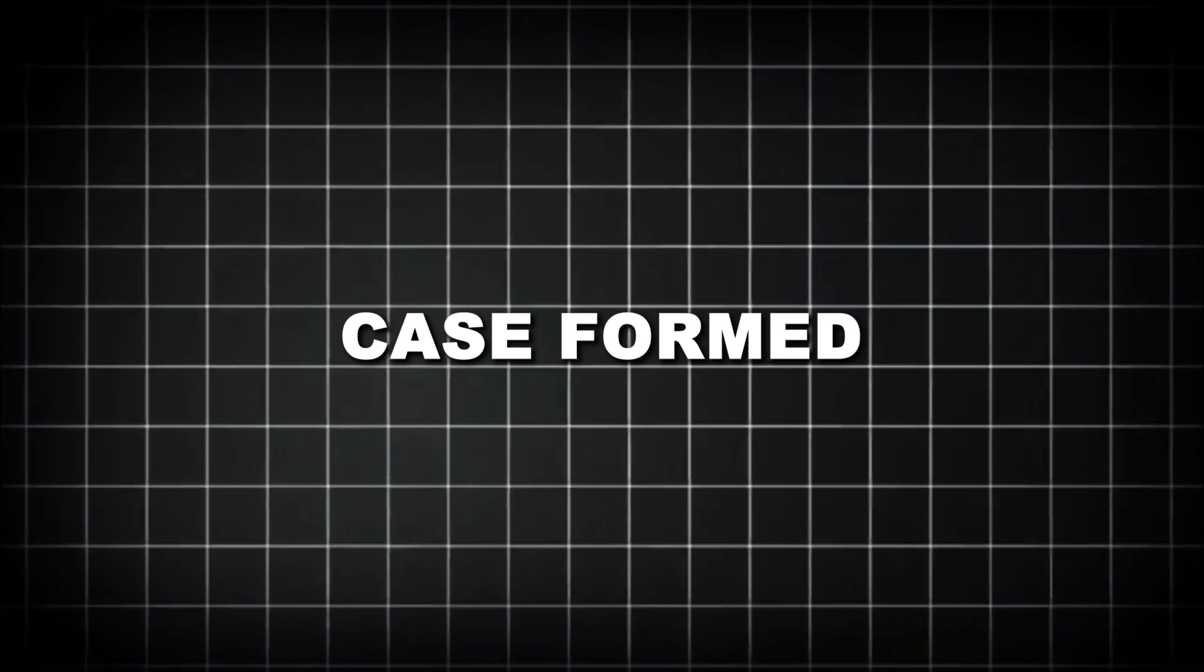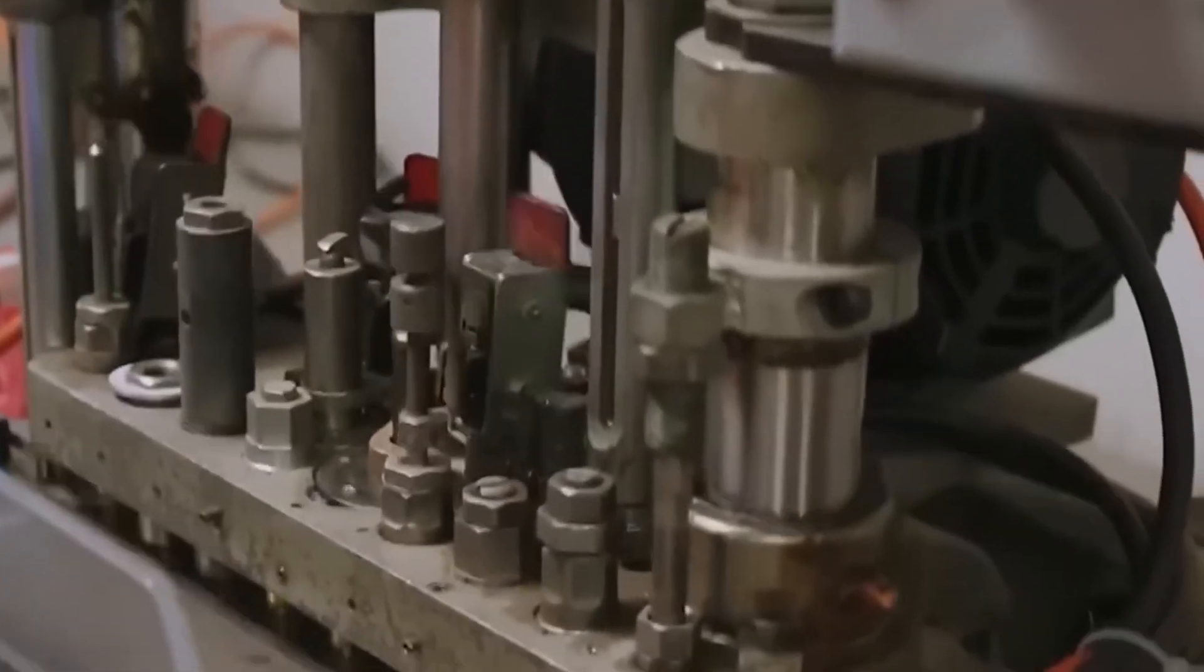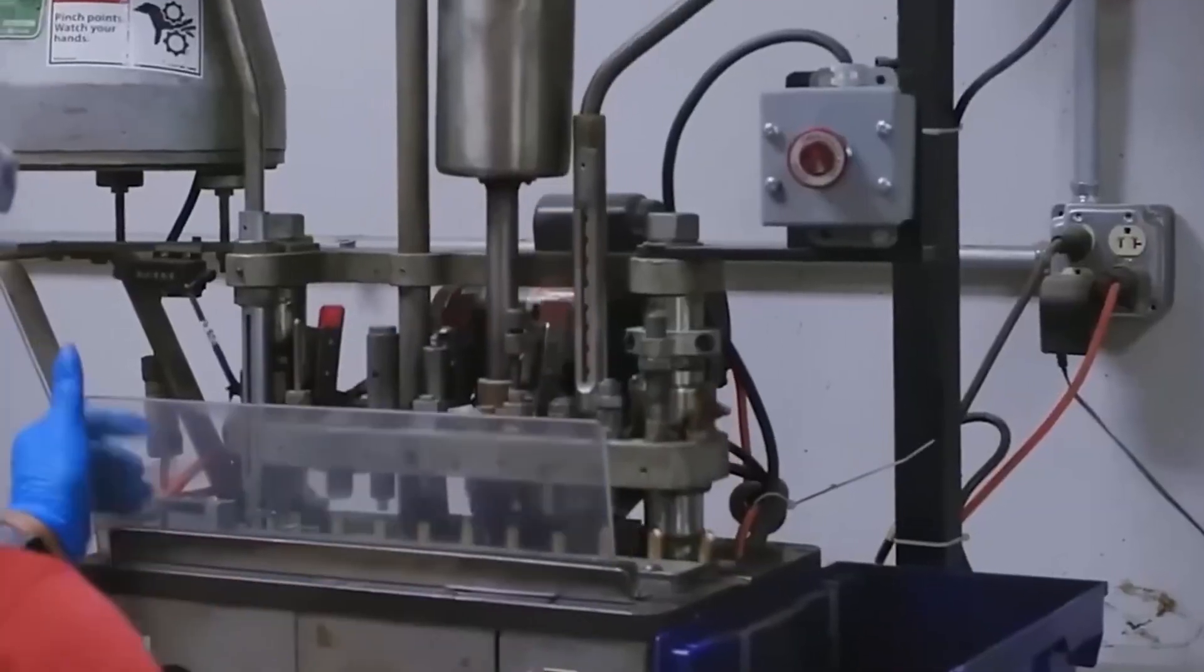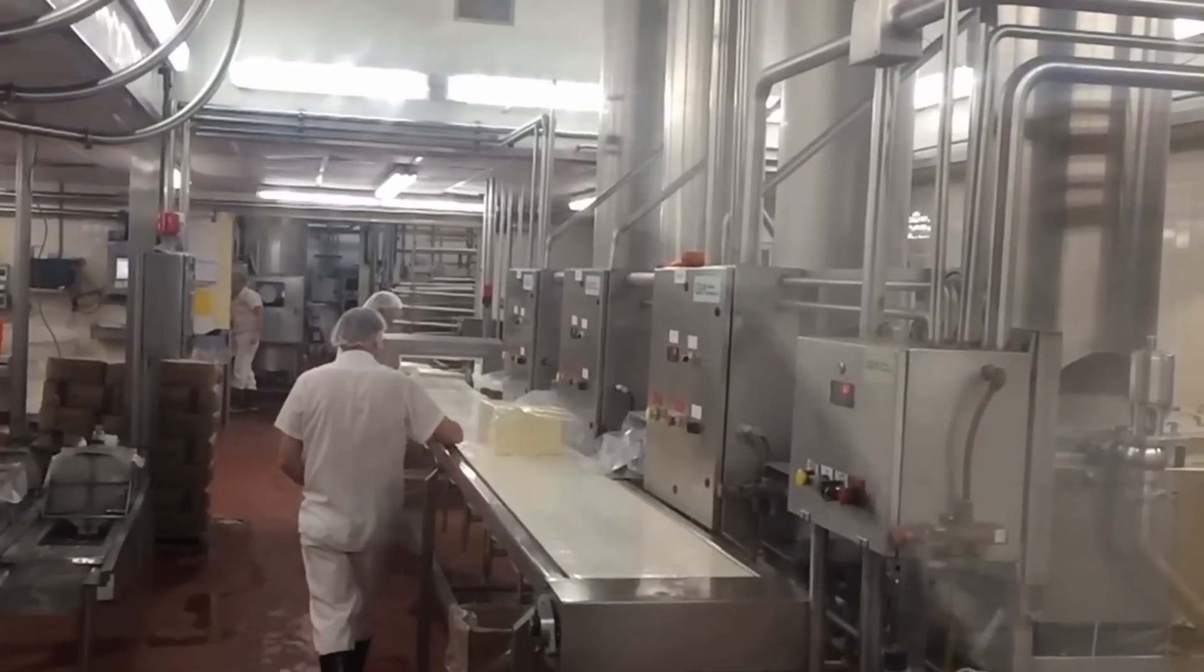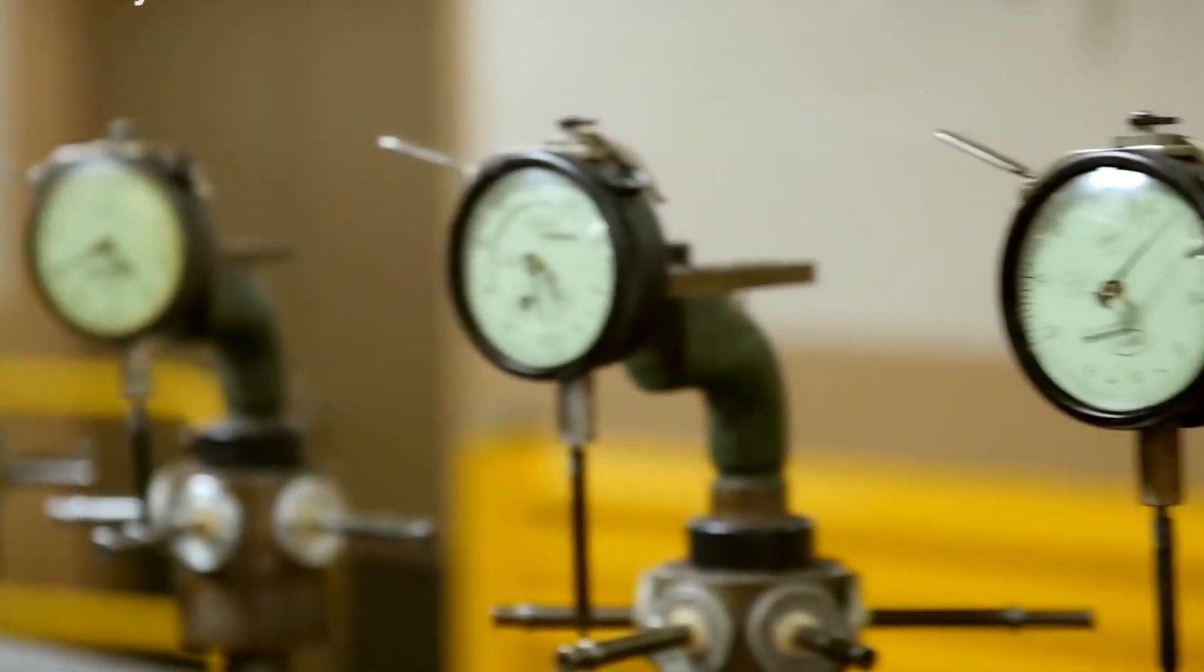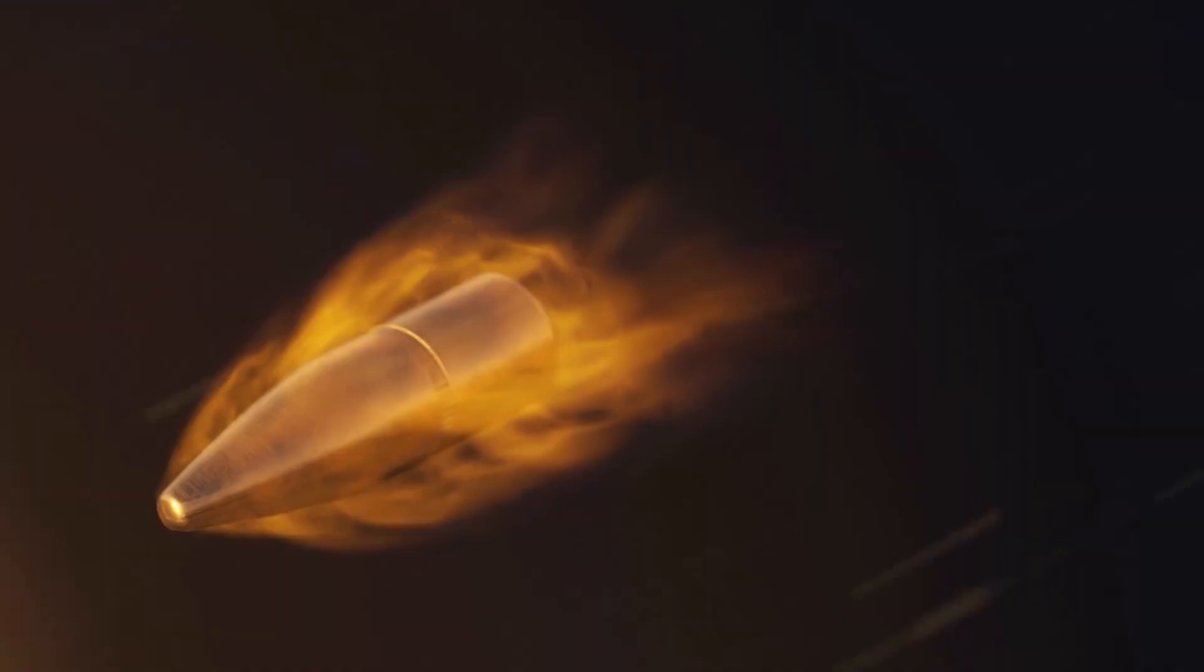With cases formed, bullets manufactured, and primers ready, the next critical component is the propellant powder. Modern smokeless powders must be measured with extreme accuracy. Variations of just a few tenths of a grain, 0.01 grams, can significantly affect pressure and velocity.